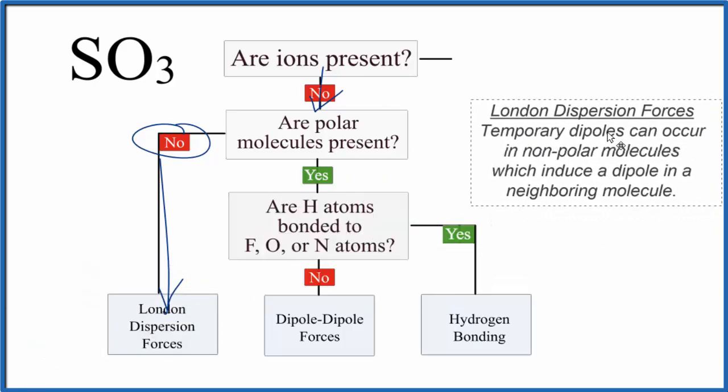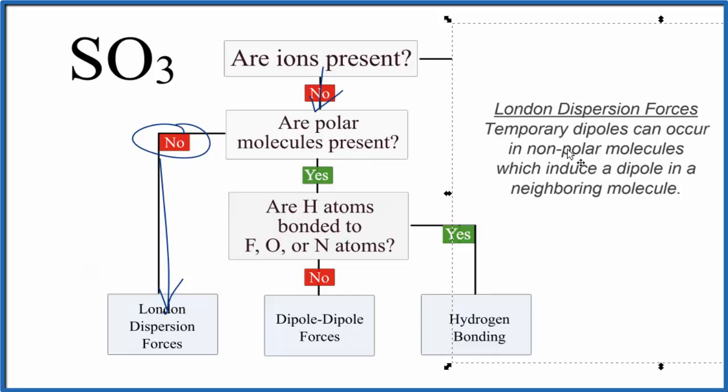London dispersion forces are these temporary dipoles. We have them with nonpolar molecules. And what happens is they cause a molecule next to them to set up a little bit of a dipole, a positive, negative, and then these molecules can attract, at least temporarily. It's fairly weak, as evidenced by the fact that SO3 is usually a gas.